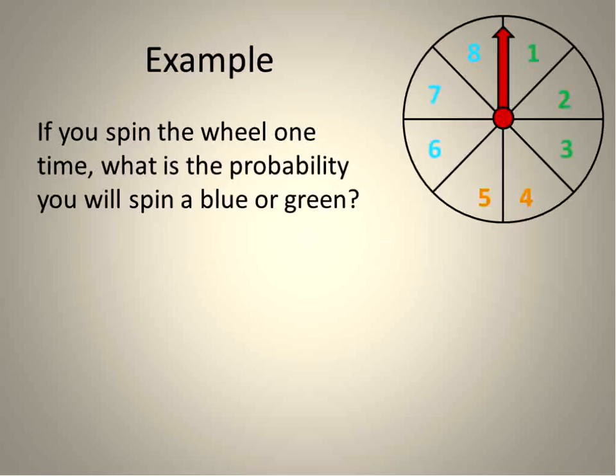Here's our example. If you spin the wheel one time, what is the probability that you will spin blue or green? So what we need to do is we need to add up the probability of blue plus the probability of green.